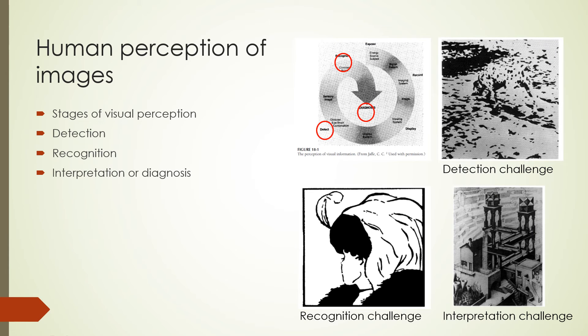So far, we have learned about the performance of image recording and display systems that allow us to view images. Before we get into the performance of the observers viewing these images, I would like to first talk a little about human perception of visual information. This slide shows various figures. The top left shows several stages of human visual perception. So far, we have learned about the first three stages which are exposure of the image receptor, recording of image information, and display of the image. We shall now learn about the last three stages circled in red on the top left figure. These are the detection of some object in the image, recognition of an object, and interpretation of what the image means or diagnosis. The other three figures shown on the top right and bottom are challenges related to the three stages I just mentioned.